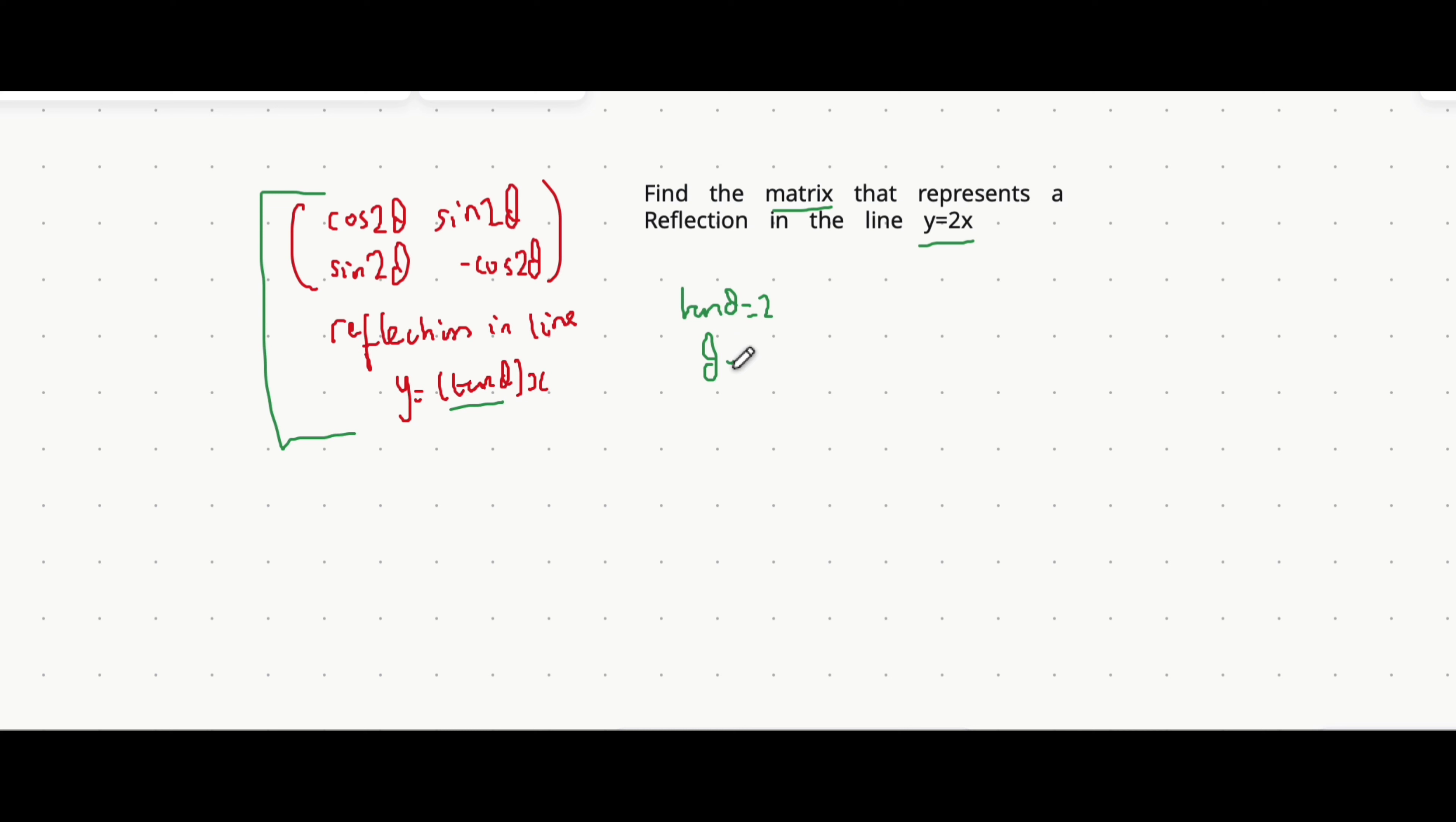You can then apply the inverse tan to both sides to get that theta is the inverse tan of 2, which you can do in radians or degrees. I believe it's 63.4 degrees, but I'd honestly store that value in your calculator just so you can input it into this matrix.